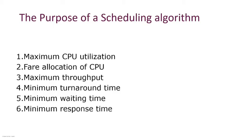First, let us see what is the purpose of a scheduling algorithm. Why do we go for scheduling? The main advantage is maximum CPU utilization — if you schedule the various processes in a proper way, the CPU can be utilized to the maximum. Other advantages include fair allocation of CPU, maximum throughput, maximum output, minimum waiting time, and minimum response time.